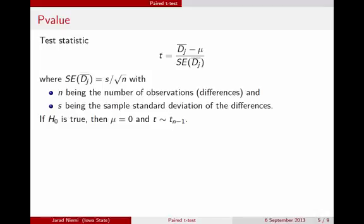If the null hypothesis is true, then mu is in fact zero, and this quantity has a t-distribution with n minus 1 degrees of freedom. In order to calculate the p-value for this one-sided test, we simply need the probability that a t-distribution with n minus 1 degrees of freedom is greater than our test statistic quantity.